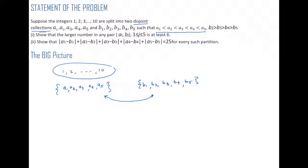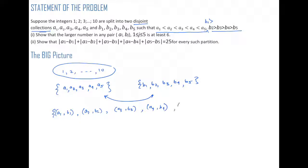Additionally, a1 through a5 is an increasing sequence, and b1 through b5 is a decreasing sequence. With this background, we want to show that if we pair these up — (a1, b1), (a2, b2), (a3, b3), (a4, b4), and (a5, b5) — the claim is that the larger number in any pair is at least six. That's Part 1 of the problem.